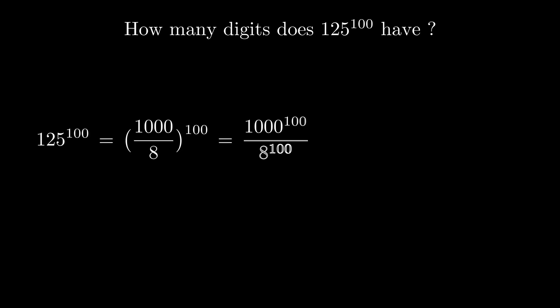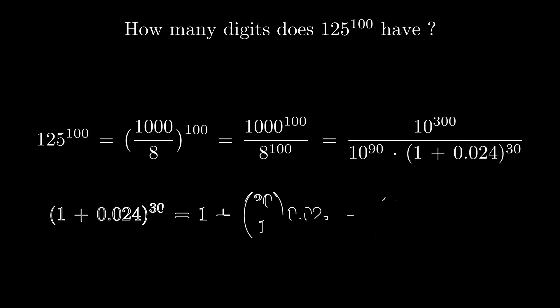Now we want to use the fact that 2 to the 10th power is 1024 which is very close to 1000. Now we can simplify the fraction and it all comes down to understanding this bracket.